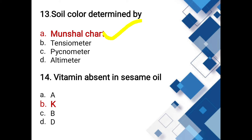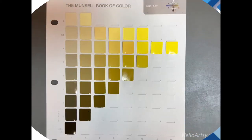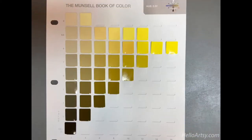Vitamin absent in sesame oil: options A, K, B, D. The answer is Vitamin K — it is absent in sesame oil. This is a Munsell chart representing yellow color in different shades, with hue, value, and chroma parameters.